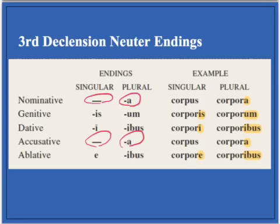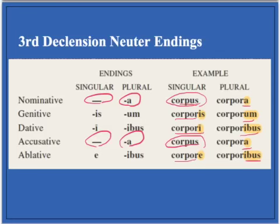Notice here, when you're declining the neuter corpus, your base is corpore, and then it goes corporis, and then again, because of the neuter law, your nominatives and accusatives have to match up. But then your base goes back to your genitive singular: corporis, then corpora, corporum, corporibus, corpora, corporibus.